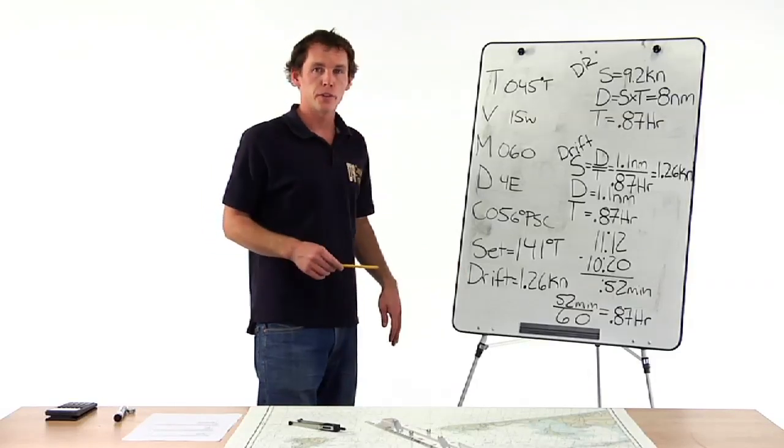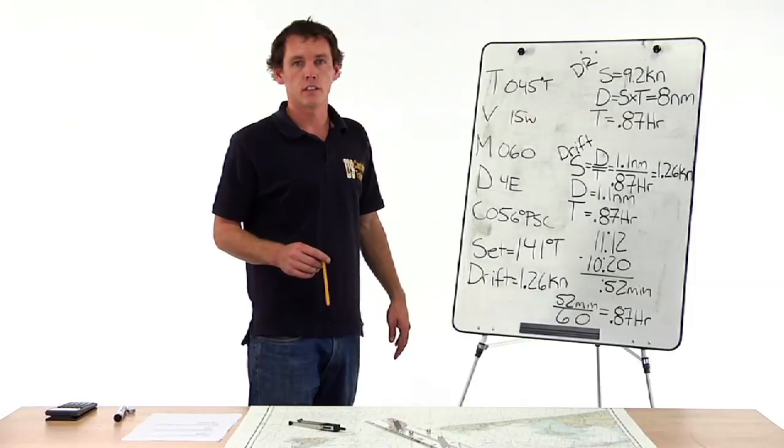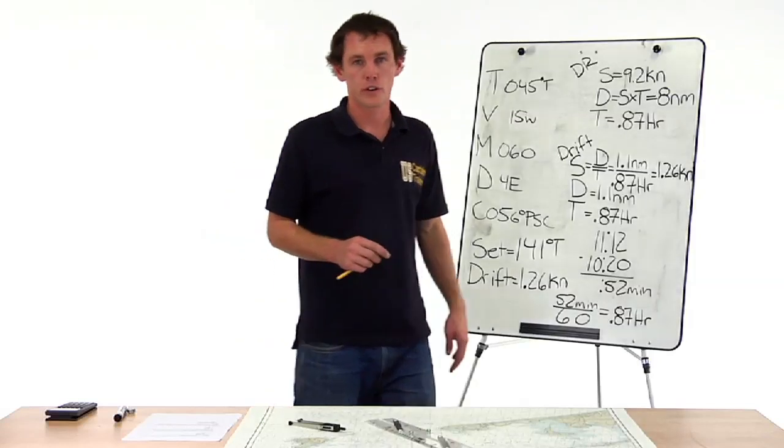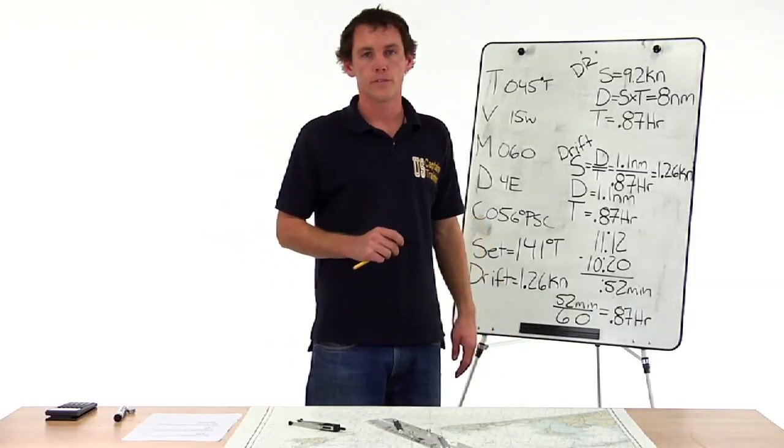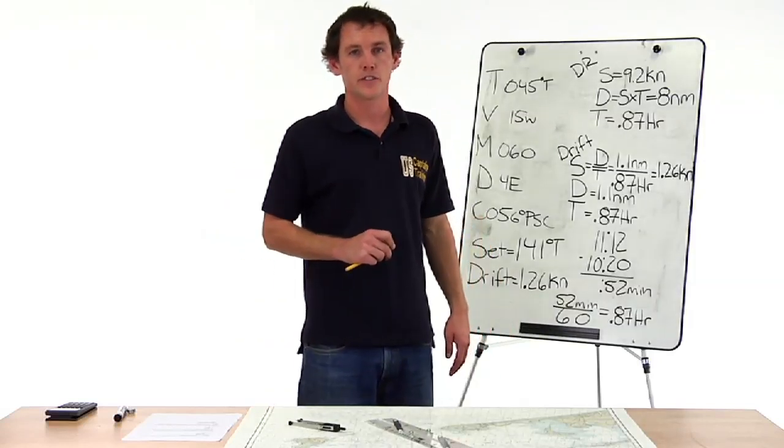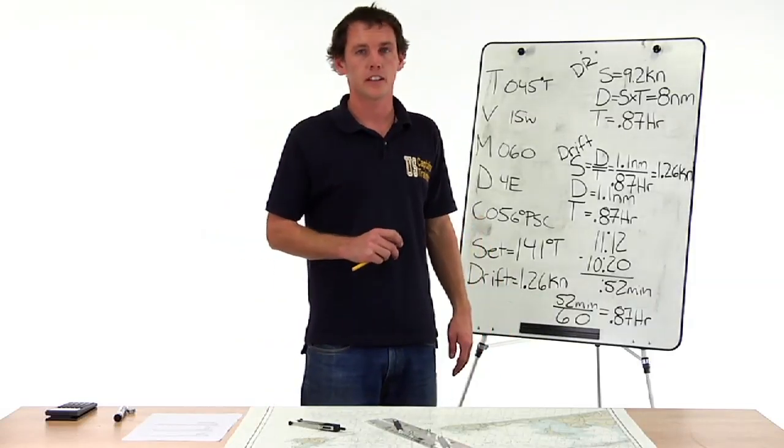And that's how we do an unknown current problem — finding the set and drift that acted on us.